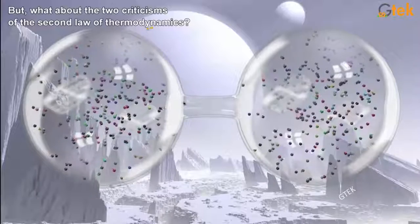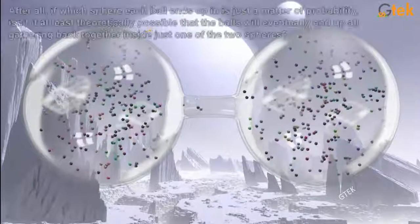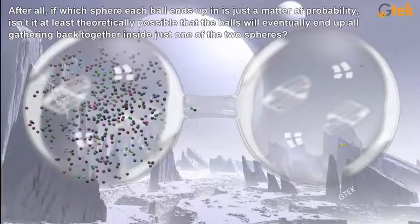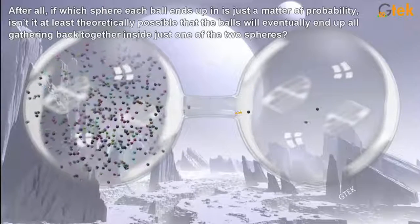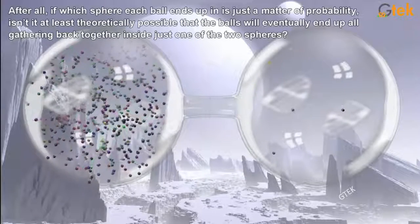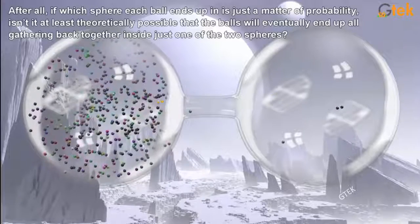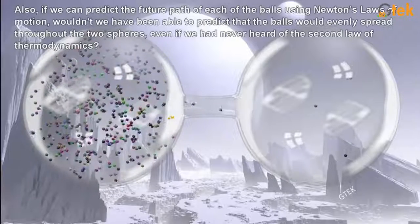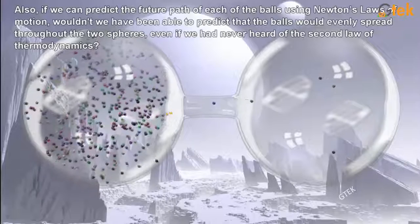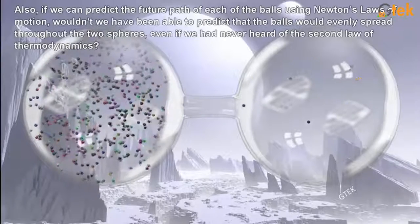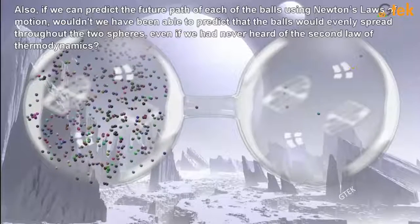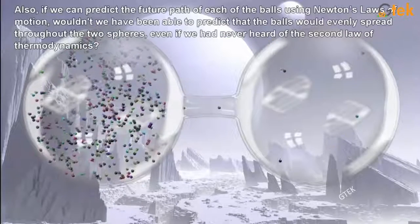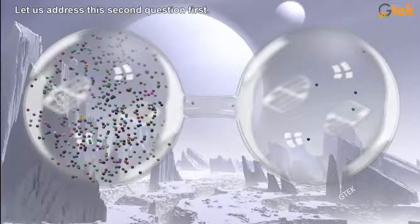But what about the two criticisms of the second law of thermodynamics? After all, in which sphere each ball ends up is just a matter of probability. Isn't it statistically possible that the balls will eventually end up all gathering back together inside just one of the two spheres? Also, if we can predict the future path of each ball by using Newton's law of motion, wouldn't we have been able to predict the balls would evenly spread throughout the two spheres even if we had never heard of the second law of thermodynamics?